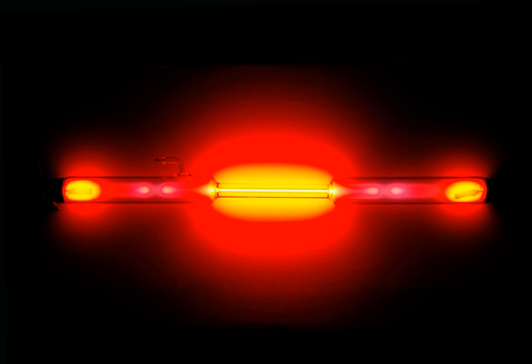Neon is often used in signs and produces an unmistakable bright reddish-orange light. Although tube lights with other colors are often called neon, they use different noble gases or varied colors of fluorescent lighting. Neon is used in vacuum tubes, high-voltage indicators, lightning arrestors, wave meter tubes, television tubes, and helium-neon lasers.